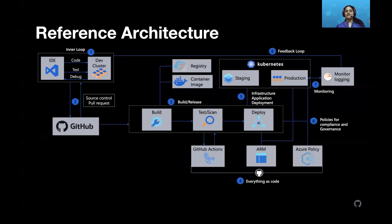Here is one such solution reference architecture which shows the development lifecycle with steps. The first is the dev inner loop - developers use their favorite code editors or IDEs, but what's more important is a dedicated dev environment or dev cluster where they can continuously code, test, and debug so that this inner loop is very fast. The second is version control for whatever code is getting deployed. From version control, we have automation in terms of build and release pipelines that can automatically build, test, and deploy your code. This DevOps pipeline is the code-to-cloud automation that's very, very important.